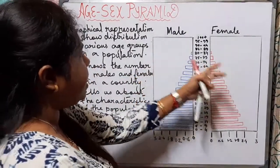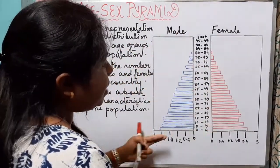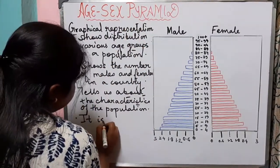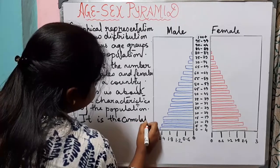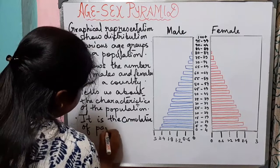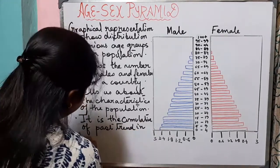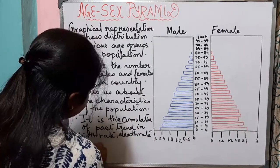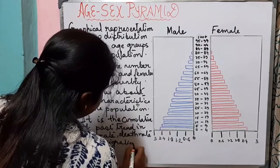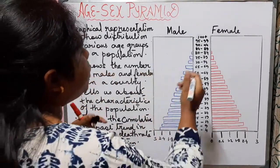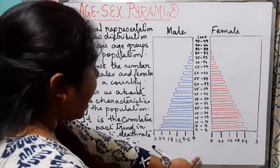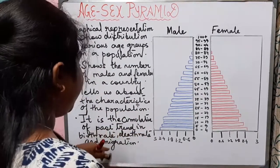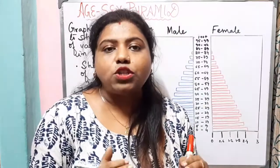The age-sex pyramid shows how the distribution of population is increasing or decreasing. It is a cumulative record of past trends in birth rate, death rate, and migration. The population distribution we see in the pyramid has resulted from these three factors: birth rate, death rate, and migration.